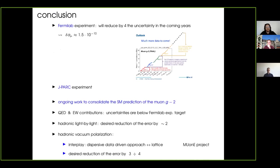Another important prospect for the future is a proposed experiment called muon-E, which aims at extracting the running of the QED coupling from the space-like region using muon-electron elastic scattering. This will be very important because it will allow a direct comparison — both are space-like — with respect to the lattice in the region where the lattice cannot have very high accuracy. The Fermilab experiment is collecting data; the run one result published two months ago is coming only from 6% of their data. They plan to publish by next summer a new result with half the present accuracy, with a target of error 1.5 in 10 to the minus 10 by the end of the experiment.